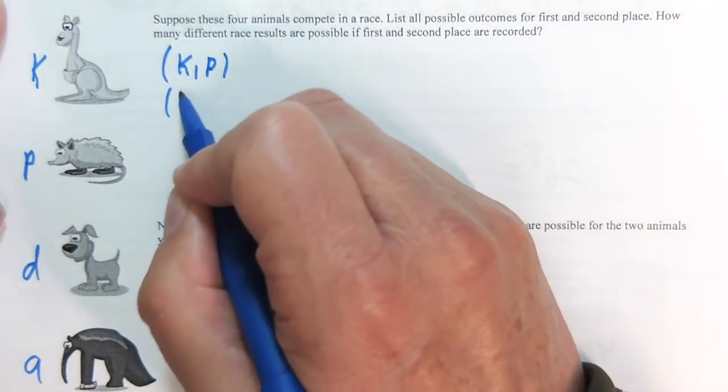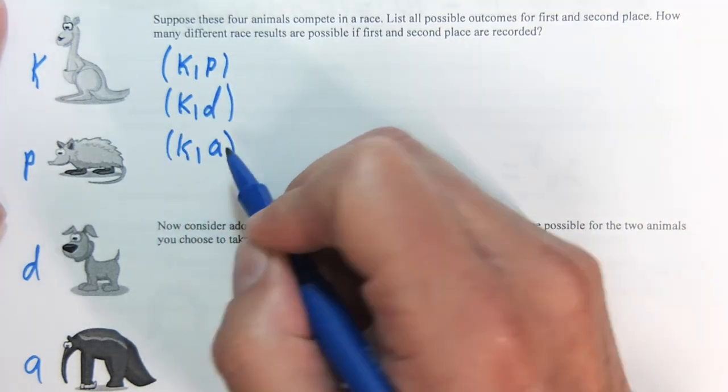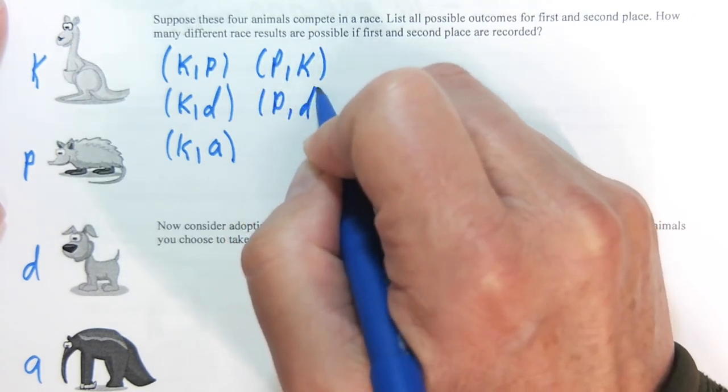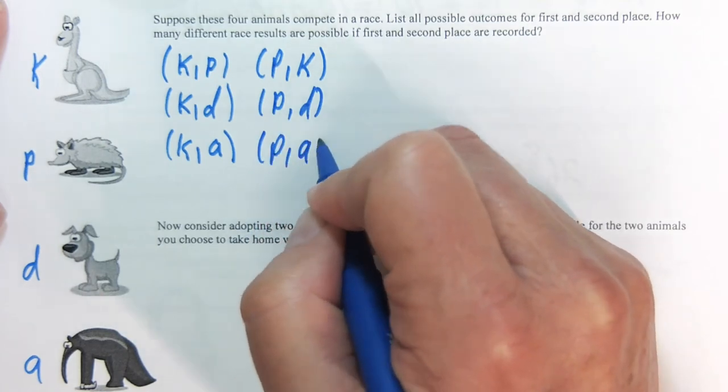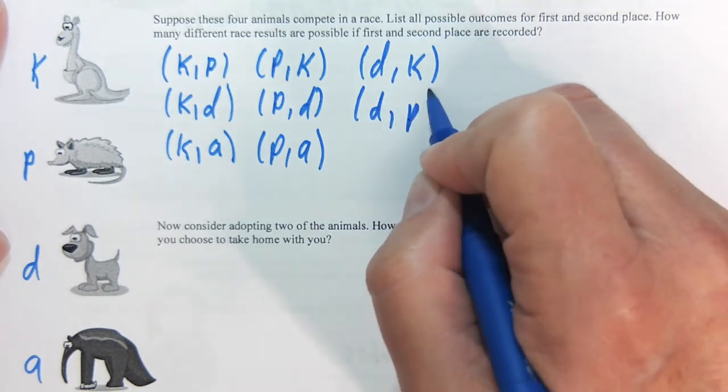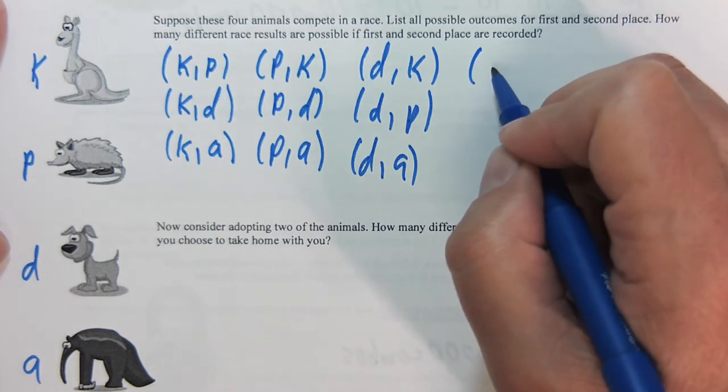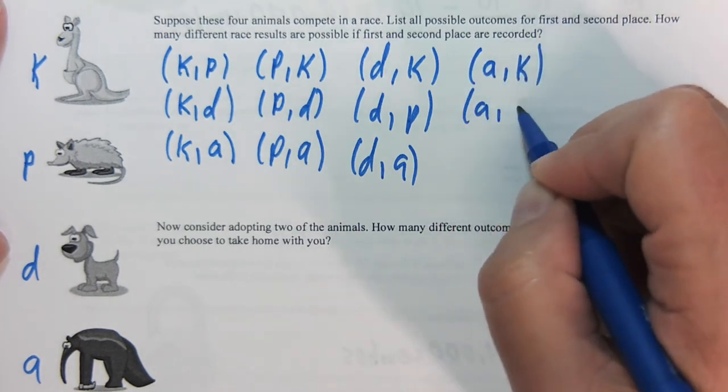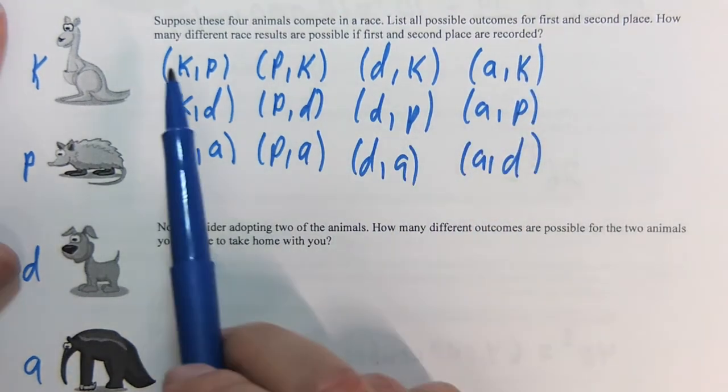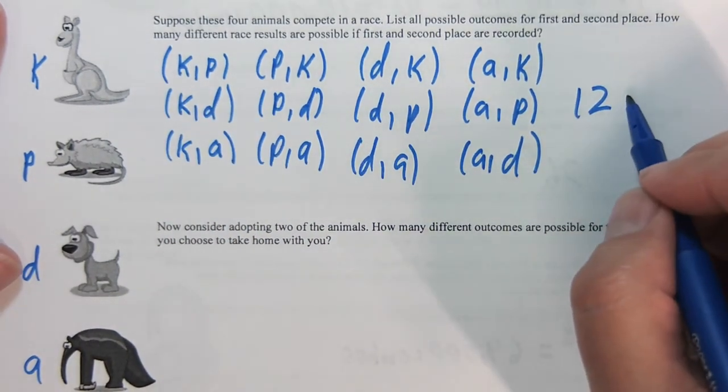The kangaroo and the possum, the kangaroo and the dog, the kangaroo and the anteater. Then we have the possum and the kangaroo, the possum and the dog, the possum and the anteater. Then we have the dog and the kangaroo, the dog and the possum, the dog and the anteater. And lastly, we have the anteater and the kangaroo, the anteater and the possum. The anteater and the dog. How many are there total? 4 by 3. There's going to be 12 outcomes.